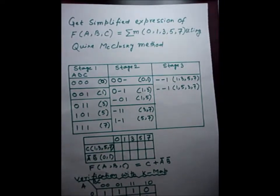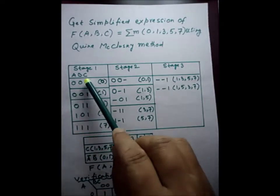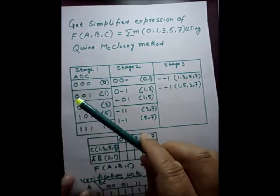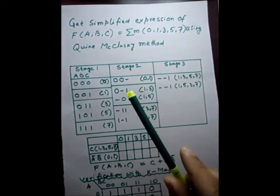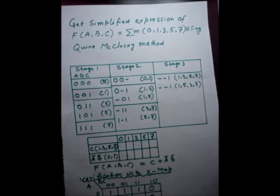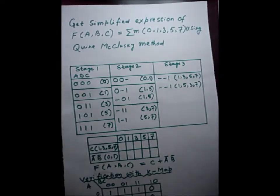Let us take another example of the Quine-McCluskey method to simplify. In this problem I have taken a three-variable problem. We have to make the first stage, and the minterms are 0, 1, 3, 5, and 7. These are to be converted into binaries first. After converting into binaries, they should be grouped according to the number of ones available in that binary number.